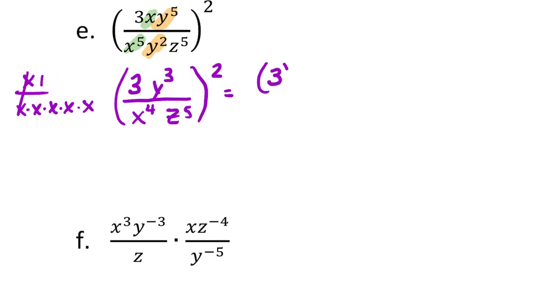And then that whole quantity is still squared. You could just write it out times itself or you can use your property where you multiply your exponents since it's just single terms inside, which will give you 9y to the sixth over x to the eighth and z to the tenth.